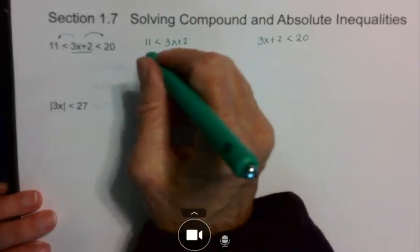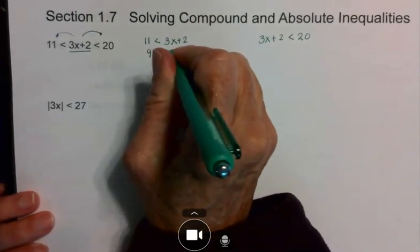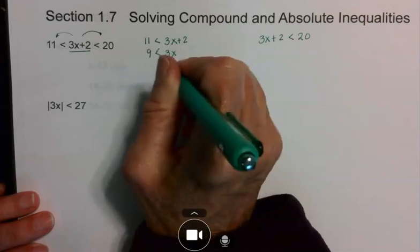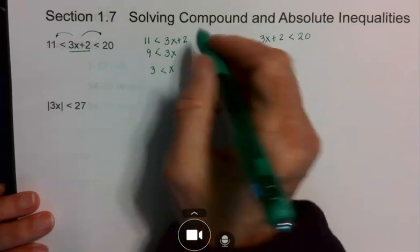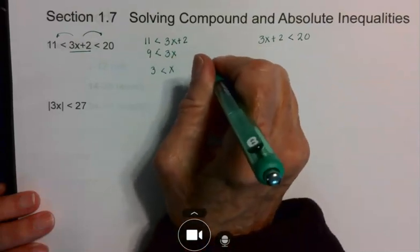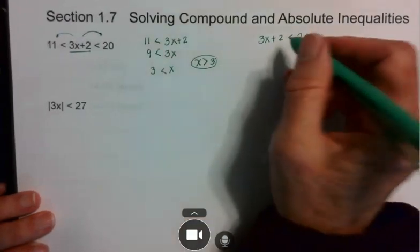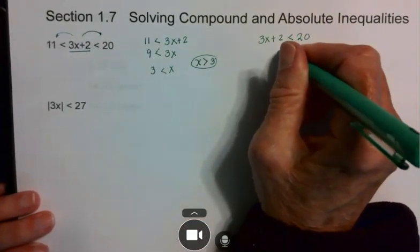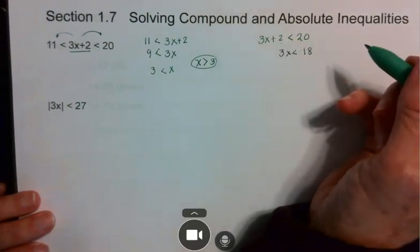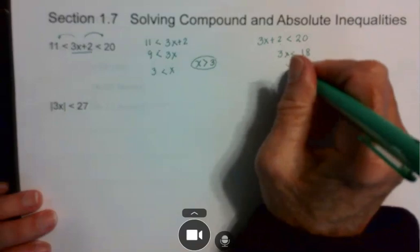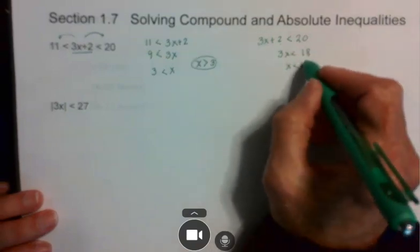I'm going to subtract 2 from both sides, so I've got 9 is less than 3x. I'm going to divide by the 3, so I have x is greater than 3. That's one answer. Then I'm going to solve this one. So I have 3x is less than 18 because I subtracted 2 from both sides. I'm going to divide by 3 and get 6. So there's my other answer.